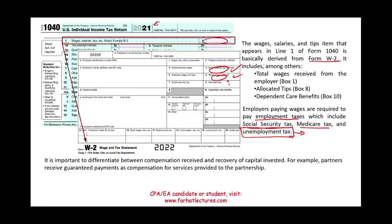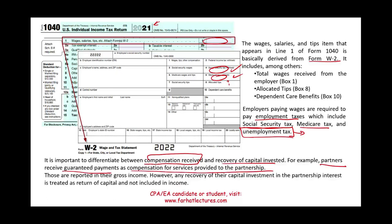It is also important to differentiate between compensation received and recovery of capital invested. For example, partners in a partnership receive guaranteed payments as compensation for services, and those are reported in gross income. However, sometimes we must determine if a payment is a recovery of capital investment — if so, it should not be included in income. Not all cash paid to partners is necessarily taxable.